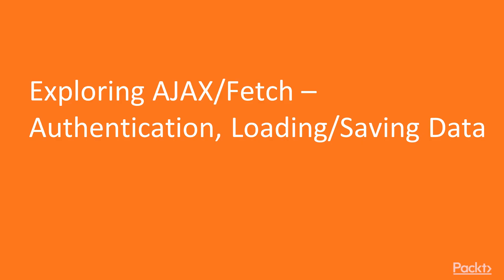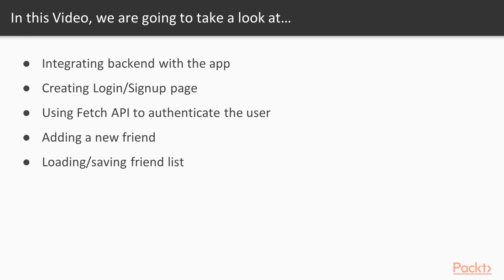In this video, we will explore Ajax and Fetch API for authentication and loading or saving of data. We will start by integrating the backend server with our app. Then we will create a login and signup page. We will use the Fetch API to authenticate the user and redirect them to the chat app. Then we will be able to add a new friend from the UI and load or save the friend list.